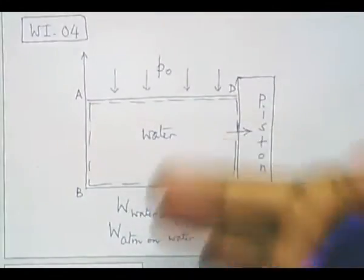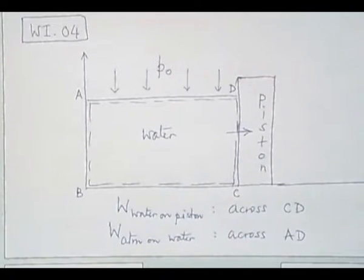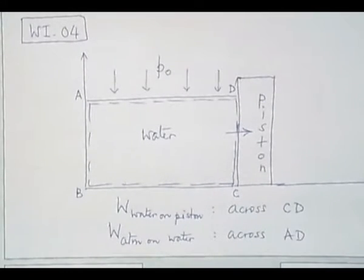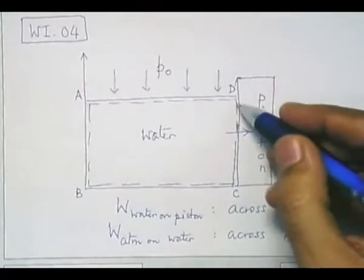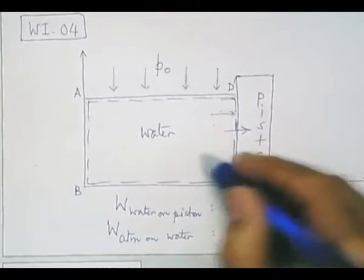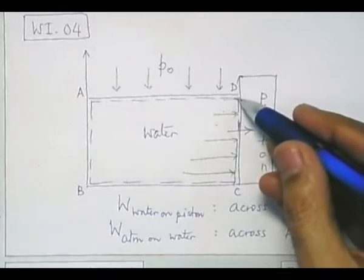Practically speaking, if force is exerted by the air on the top layer, the inner particles of water automatically exert some force on the bottom layer — is that correct? The four surfaces A-B, B-C, C-D, and D-A define our water system. Out of these four, the two active surfaces across which work is being done are C-D and A-D. Look at boundary C-D: the pressure starts with p0 and goes on increasing. Integrating that F with respect to dx gives one part of the answer.